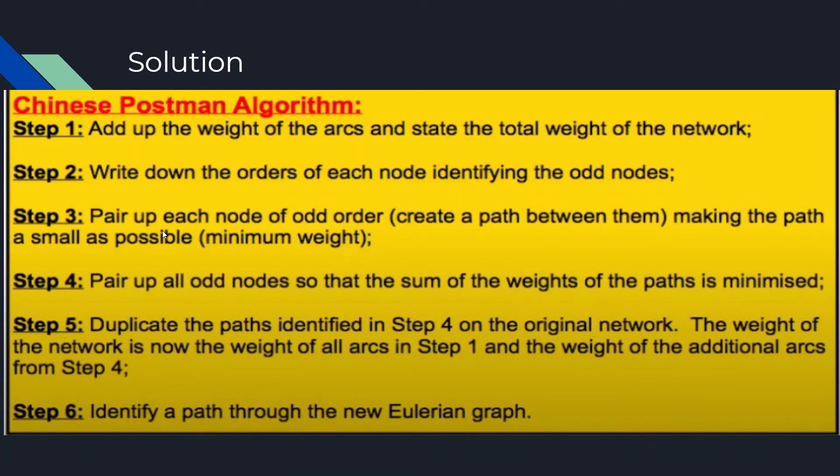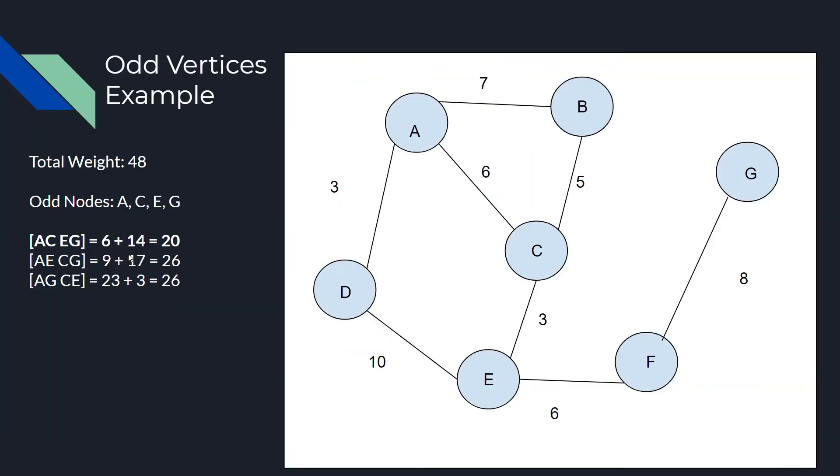So, let's go on to step three. It says to pair up each node of odd order. So, we have four of them making the path as small as possible. So, for example, A, C, the smallest path is simply just going to 6 because any other path would be greater than 6. For example, A, B, C would have a weight of 12. E, G, the only way to get to G from E is adding up 6 and 8, going E, F, and then to G.